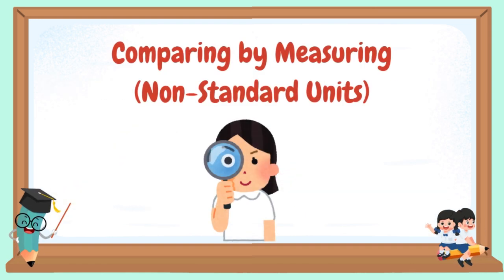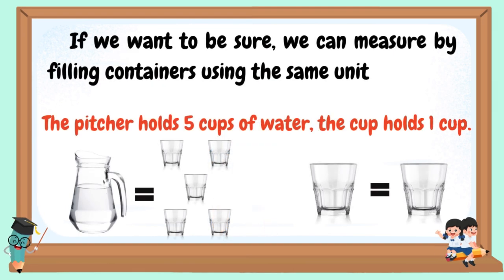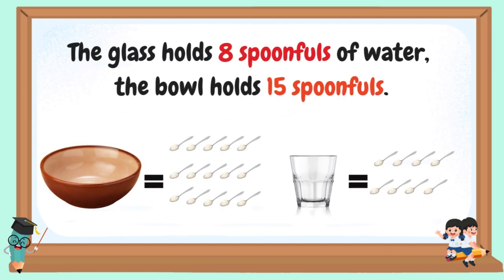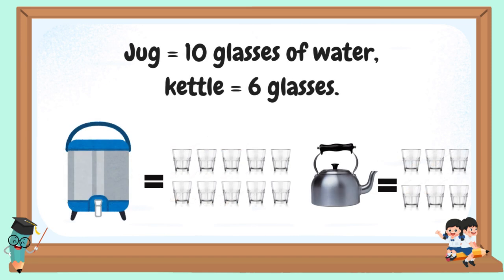Comparing by measuring non-standard units: if we want to be sure, we can measure by filling containers using the same unit. The pitcher holds five cups of water; the cup holds one cup. The glass holds eight spoonfuls of water; the bowl holds fifteen spoonfuls. A jug is equal to ten glasses of water, and a kettle is equal to six glasses of water only.